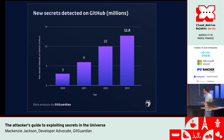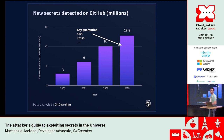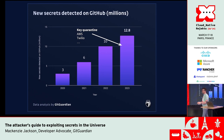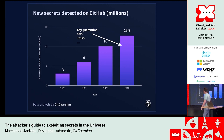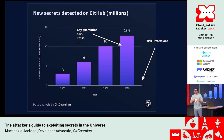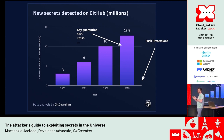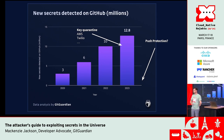We released this report last week, and I really thought the number was going to go down from 10 million. GitHub now does key quarantine — if you leak an AWS key, AWS will quarantine it if found. I expected the number to go down, but it didn't, because there are still so many things being leaked and new types of keys that it's almost impossible to keep up. GitHub also rolled out push protection to stop you from pushing a key, but it only works for certain keys and affects about 20% of what we're seeing. The problem keeps getting bigger regardless.